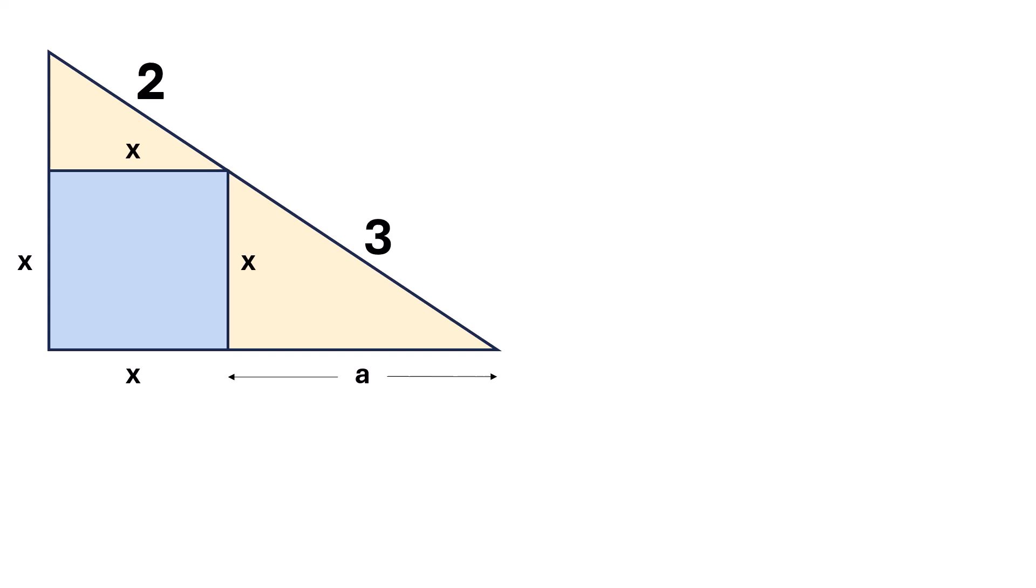Both of them are similar triangles, so we can say 2 over x is equal to 3 over a. From this, we get that a is equal to 3x over 2.